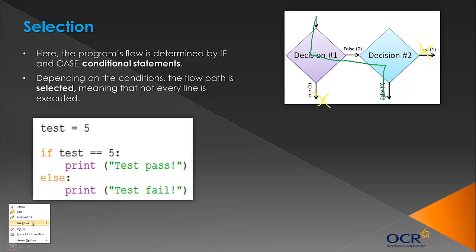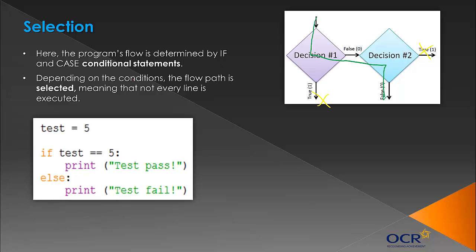In this example: test equals 5. If test equals 5, print test pass. This bit runs because that's true. But the else branch never runs — it skips that out and won't execute it because the selection has already occurred. We know it equals 5, so we print 'test pass'. 'Test fail' will never get printed.